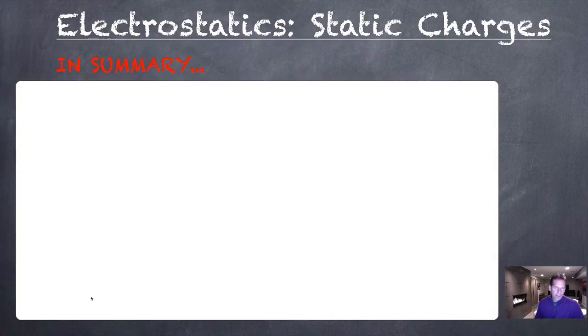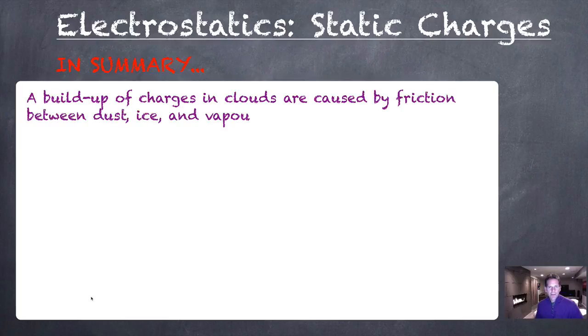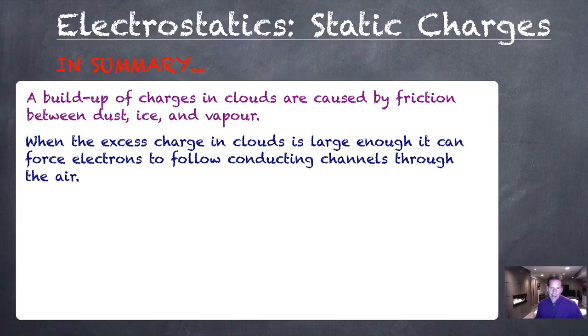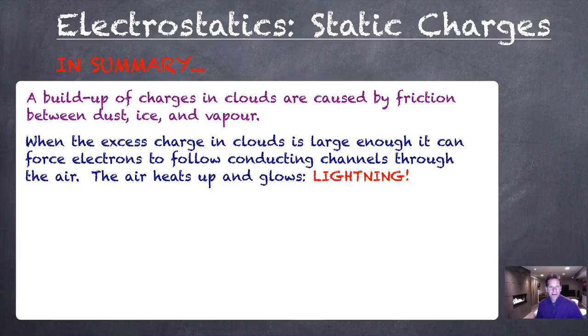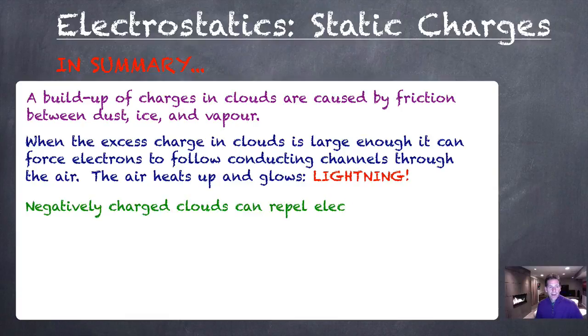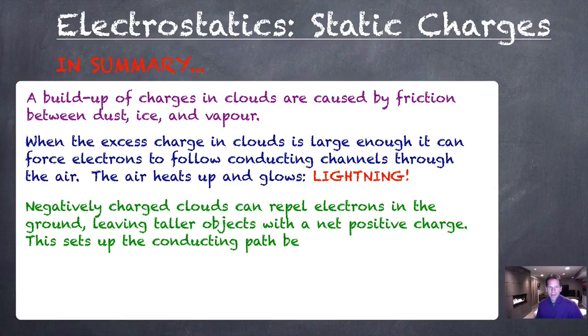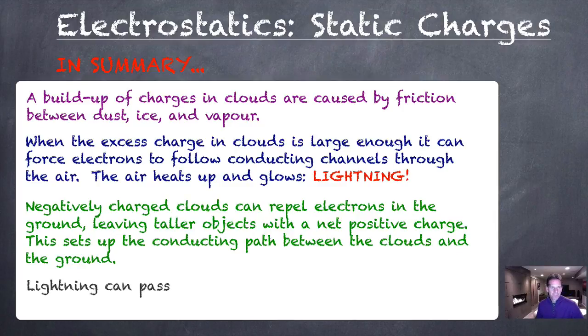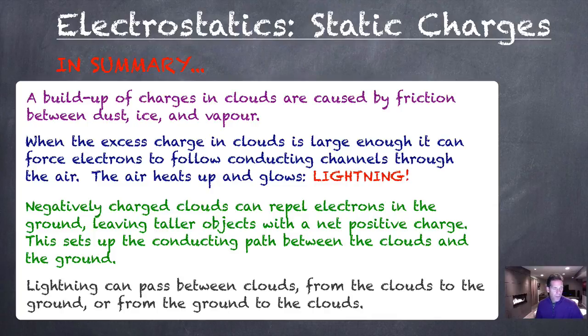So, in summary, a buildup of charges in clouds are caused by friction between dust, ice, and vapor. And because the clouds have charge, that excess charge in the clouds can be large enough that it can force electrons to follow conducting channels through the air. The air heats up and glows. That's what we call lightning. Negatively charged clouds can repel electrons in the ground, leaving taller objects with a net positive charge. This sets up the conducting path between the clouds and the ground. Although there are more than three types of lightning, I've crudely described three here. It can pass between clouds, called sheet lightning, from the clouds to the ground, or from the ground to the clouds. Those last two would be fork lightning. So, during a thunderstorm, stay inside.